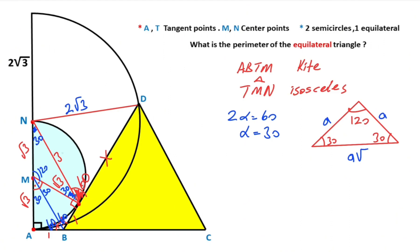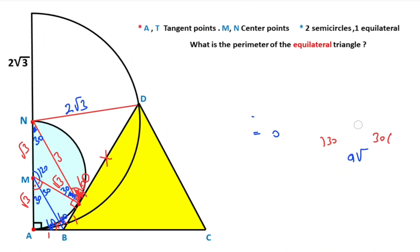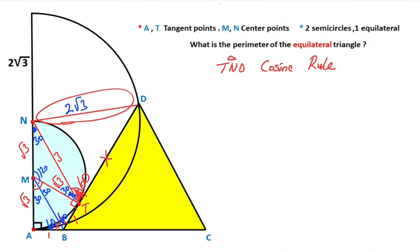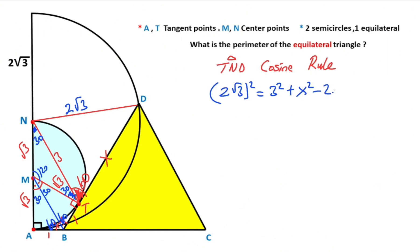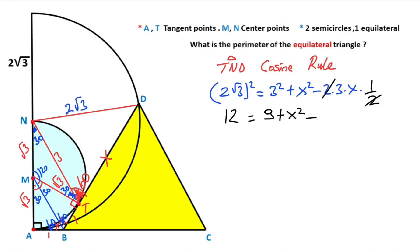If you focus on triangle NDT, we can apply the cosine rule to get the value of x. The square of the side 2√3 equals 3² plus x² minus 2 times 3 times x times cosine 60 degrees. So 12 equals 9 plus x² minus 3x, since cosine 60 degrees equals one half.